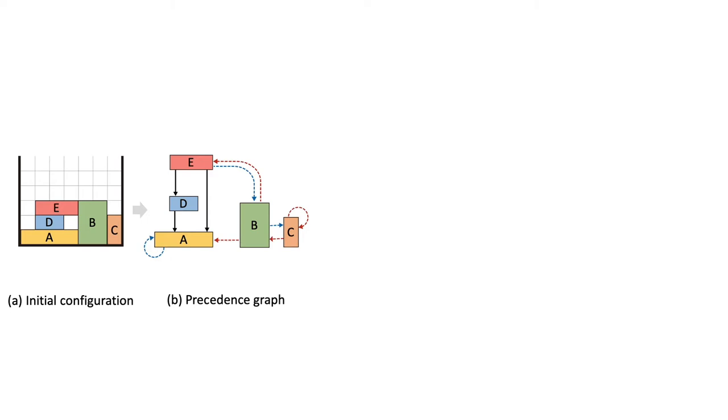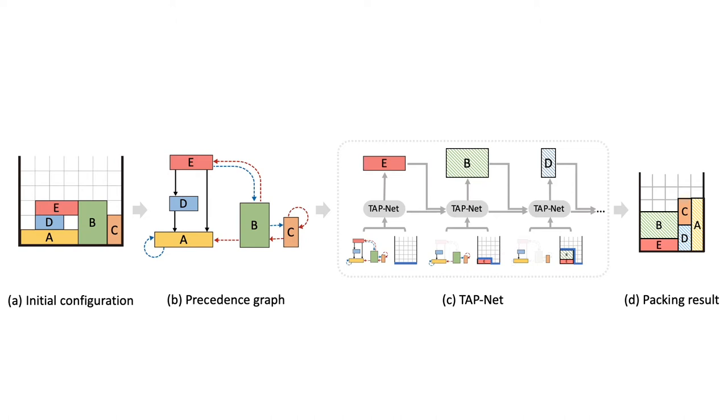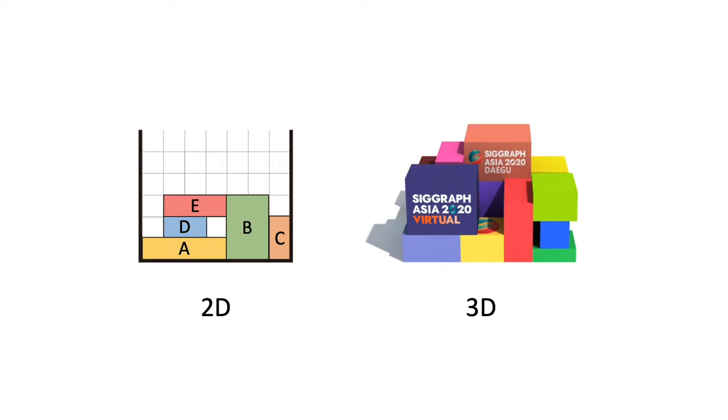To address the TAP problem, we first encode the axis constraints into a precedence graph, and then propose a learning-based method to find the packing order and orientations for the objects. Note that our method can work on both 2D and 3D shapes, and for simplicity, we explain the algorithm details using 2D boxes.